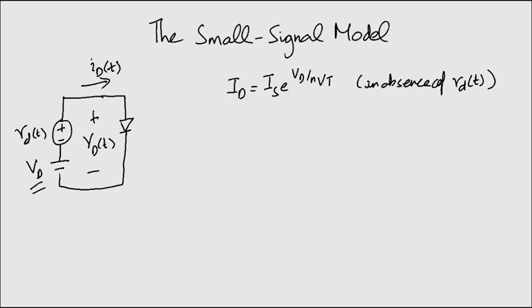But how did we separate the AC and DC voltages so easily? We will soon find out. Next, consider when the small signal is applied as we can see in this figure.